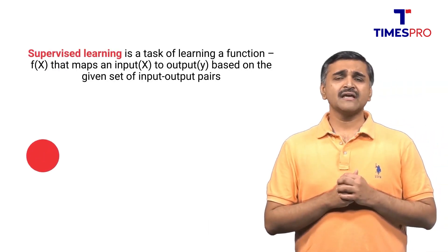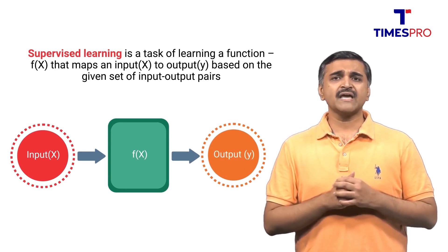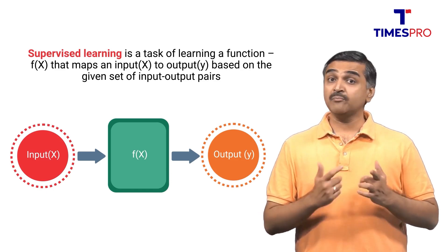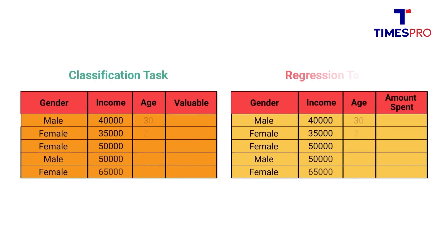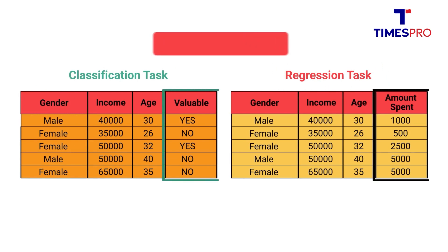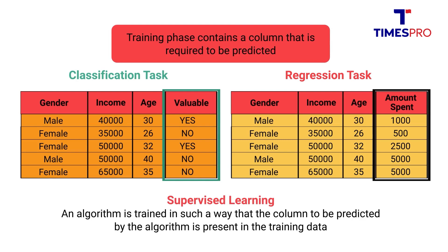Hence, supervised learning is a task of learning where a function f(x) maps an input x to output y based on the given set of input-output pairs. Here are the examples of classification and regression tasks under supervised learning. In both these tasks, the training phase contains the column that is required to be predicted, and hence this is called supervised learning, where an algorithm is trained such that the column to be predicted is present in the training data.